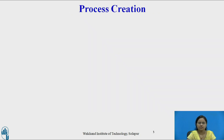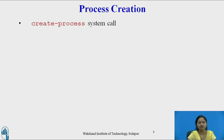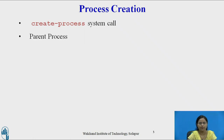Let us see process creation. A process can be created using the CreateProcess system call in the Windows operating system. Process creation is different in different operating systems, as different operating systems may use different system calls to create processes. Whenever this system call is executed, the invoking process is called the parent process and the newly created process is called the child process.